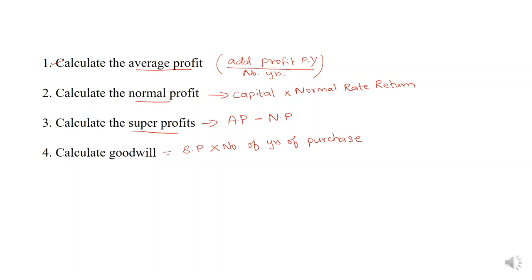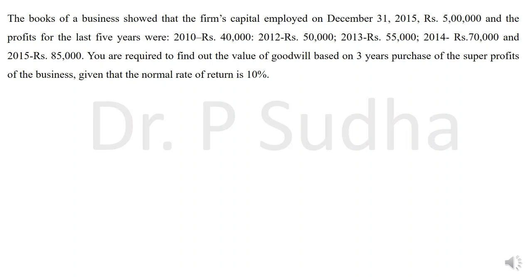Now let's see how to work out the answer. The first question: the books of the business show that the firm's capital employed on December 31st, 2015 is 5 lakhs. The profits for the last 5 years were 40,000, 50,000, 55,000, 70,000, and 85,000. Find the value of goodwill based on 3 years purchase of the super profit. The normal rate of return is 10%.